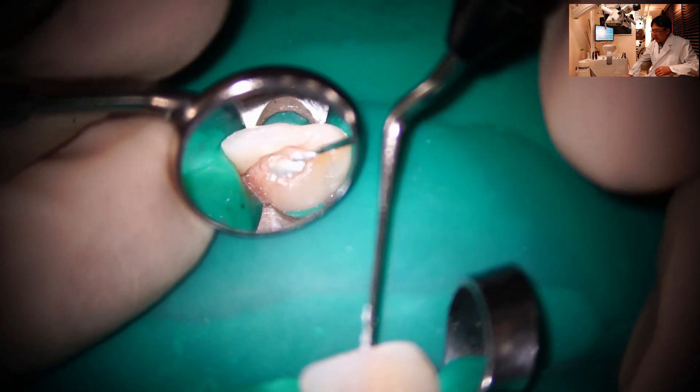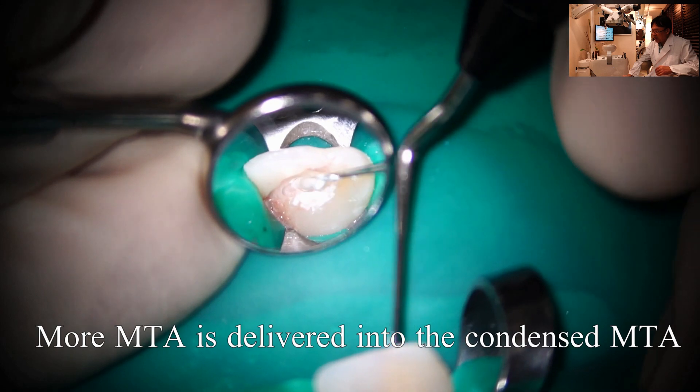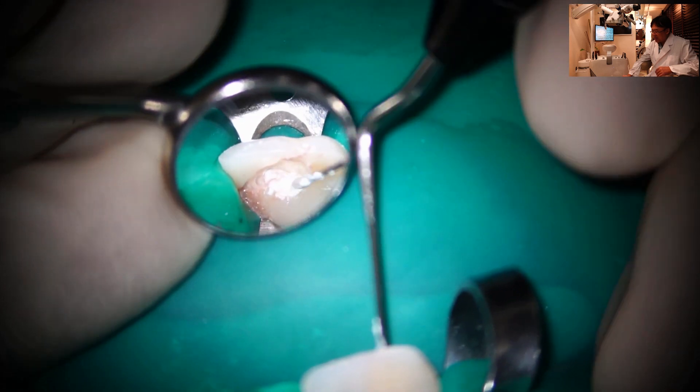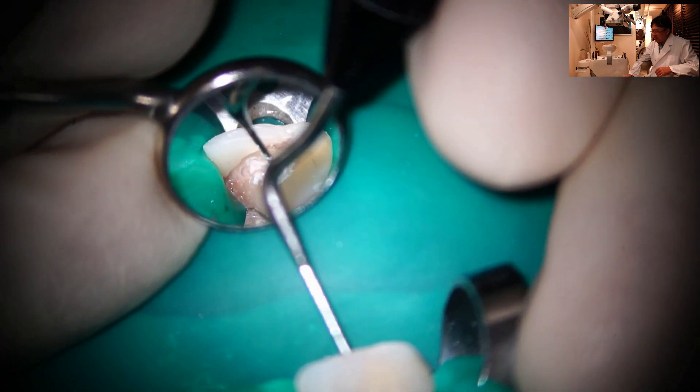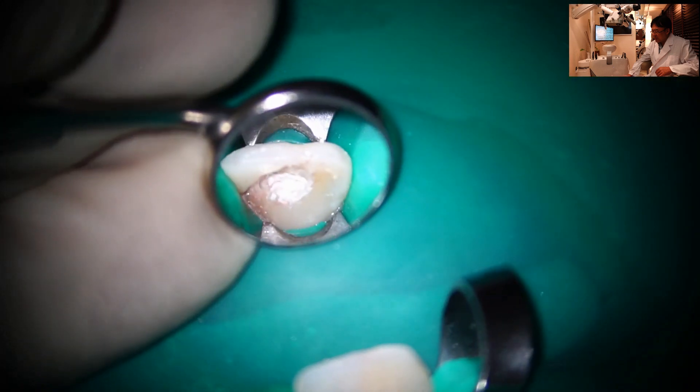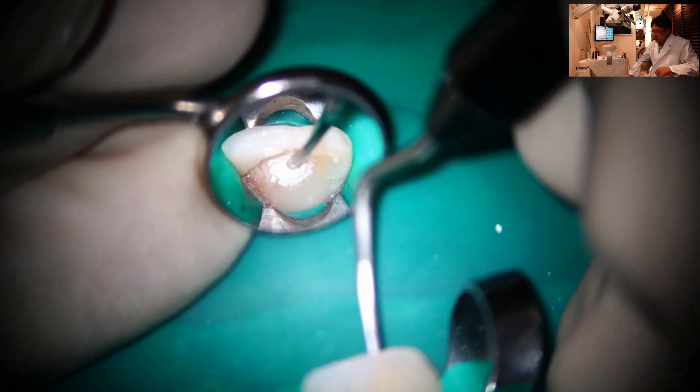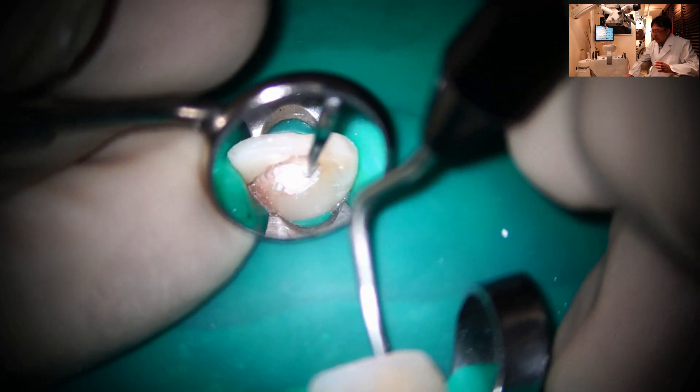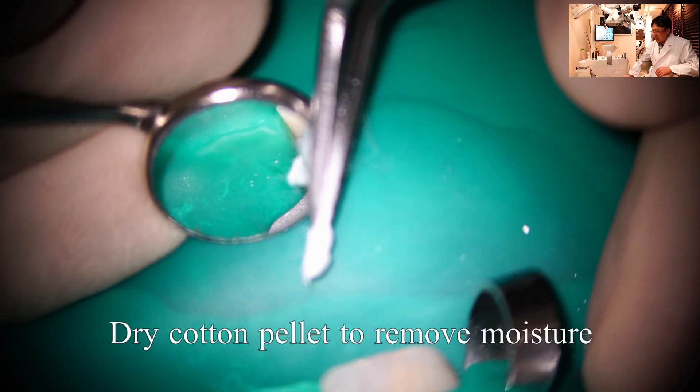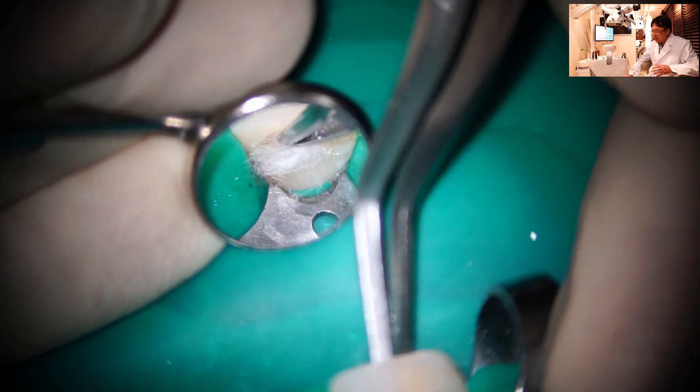Then I want to add more MTA. And you need to have at least 1mm thickness of MTA over the blood clot. Again, here comes the dry cotton pellet to remove moisture and condense MTA.